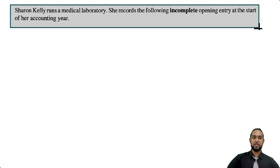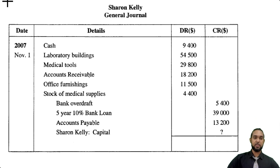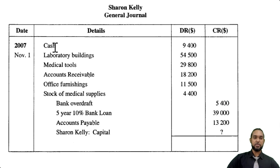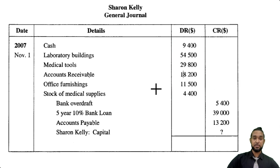They tell us that Sharon Kelly runs a medical laboratory. She records the following incomplete opening entry at the start of her accounting year. They give us a general journal for Sharon Kelly. We're seeing cash, laboratory buildings, medical tools, account receivable, office furnishings, stock of medical supplies — all assets, in the debit column because assets have debit balances.